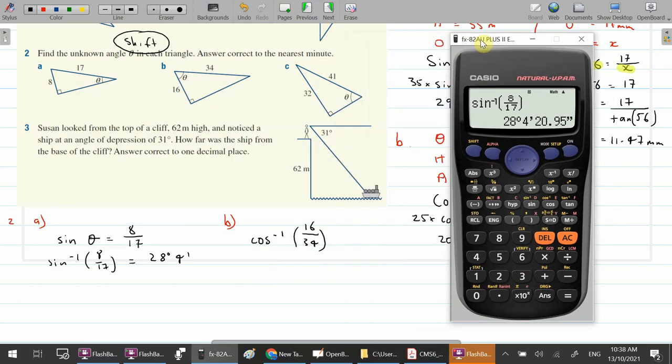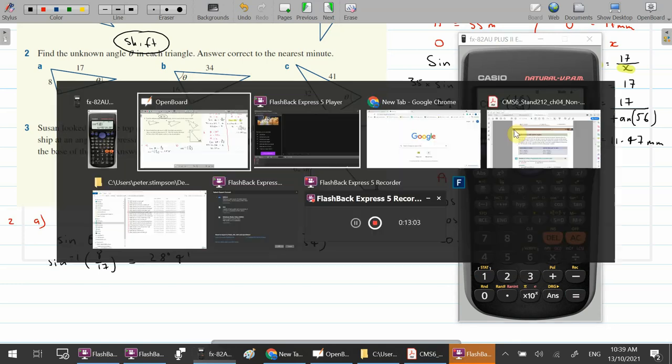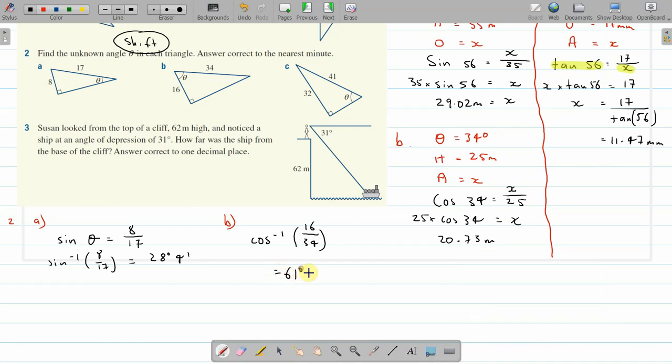So this time we're doing shift and cos, and this in the brackets, 16 over 34, close the bracket. And this is decimal so we need degrees and minutes. There it is. 61 degrees 55 minutes. That's over 30 so I have to round that up. 61 degrees 56 minutes.